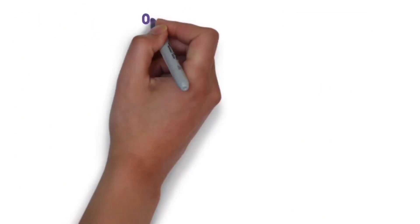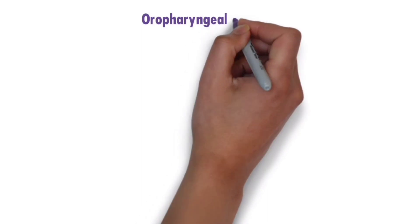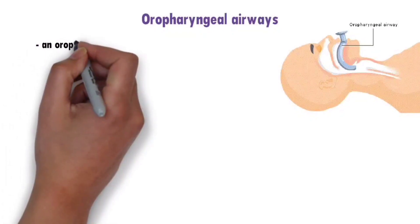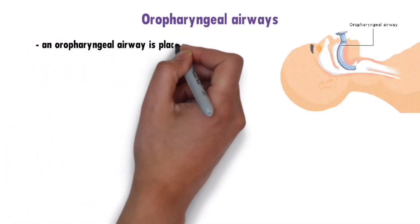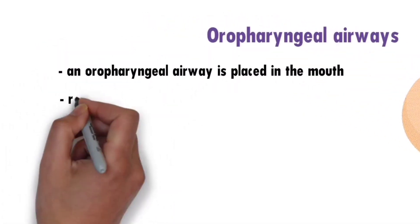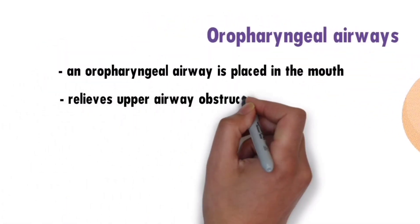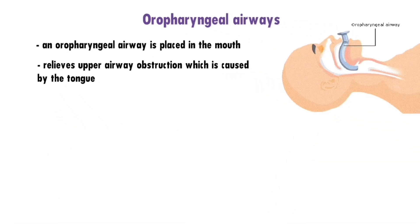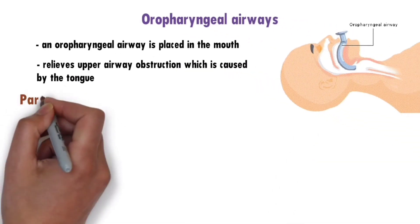Let's discuss briefly the oropharyngeal airways. As the name suggests, an oropharyngeal airway is placed in the mouth. It is designed in a curved shape that fits well in the outline of the mouth and pharynx. Inserting this airway relieves upper airway obstruction caused by the tongue.